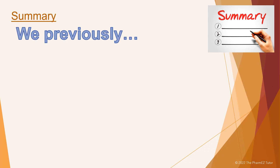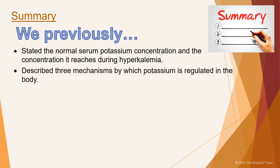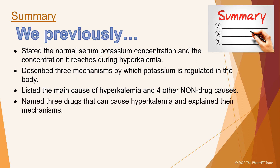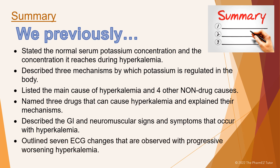In summary, we covered the normal serum potassium concentration and the concentration seen in hyperkalemia. We described three mechanisms by which potassium is regulated in the body. We listed the main causes of hyperkalemia including four non-drug causes and three drug classes with their mechanisms. We described the GI and neuromuscular signs and symptoms, and outlined the ECG changes observed with progressive worsening hyperkalemia.